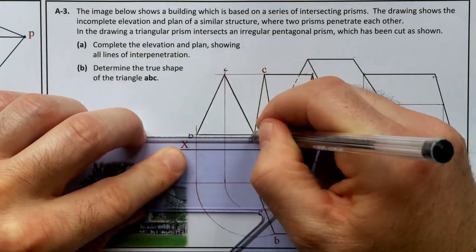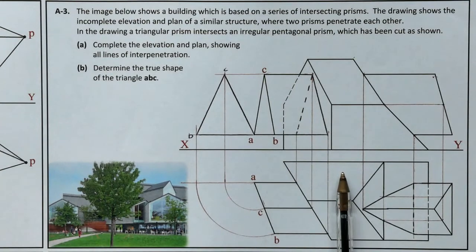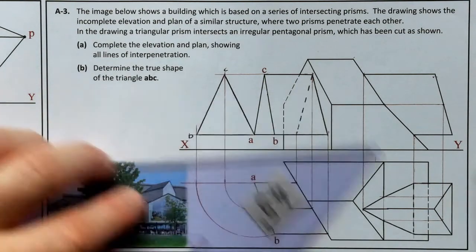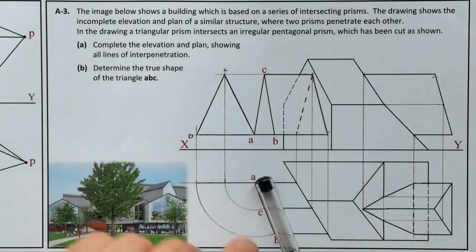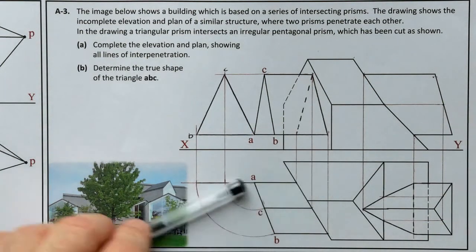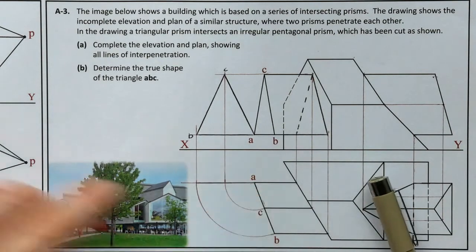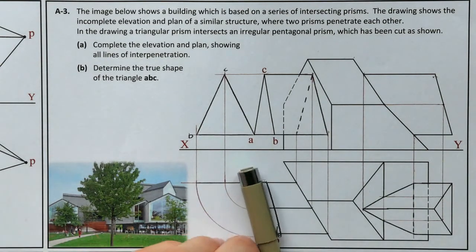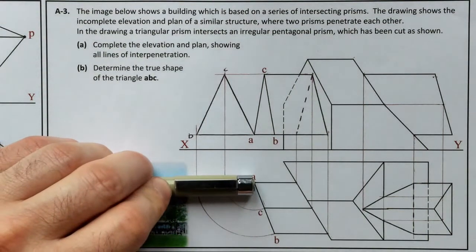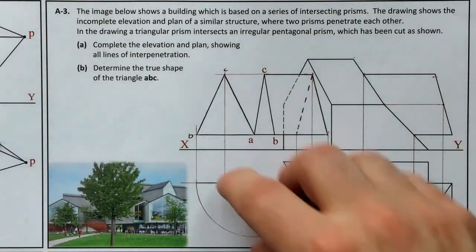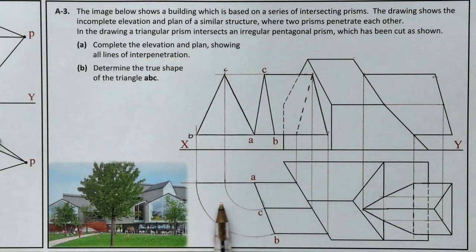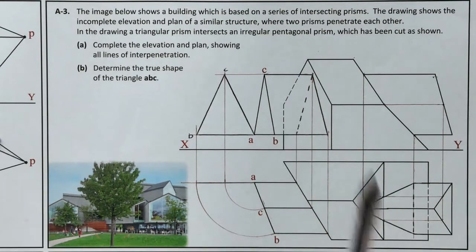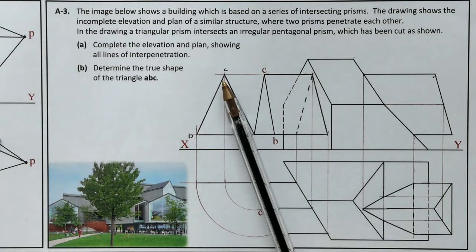What I've actually found is the true shape of the door ABC. That's simply done by rotating — or abatting — it around so we're looking straight at it. In elevation we're looking straight at it, so I just rotated the door from this position around to where it's parallel. Another way would have been to set up an X1, Y1 perpendicular to the edge view of face ABC, project the points out, and take heights from the elevation — absolutely fine doing that too.